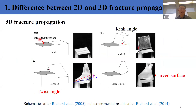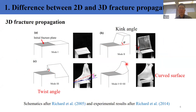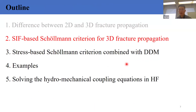It's more complex in the 3D case, as shown in the schematics and experimental results. In the 3D case we not only need to consider the kink angle but also the twist angle. Under a mixed-mode loading condition, the new fracture surface is curved, so we have to find a way to accurately capture this curved surface. This is the major difference between 2D and 3D fracture propagation.